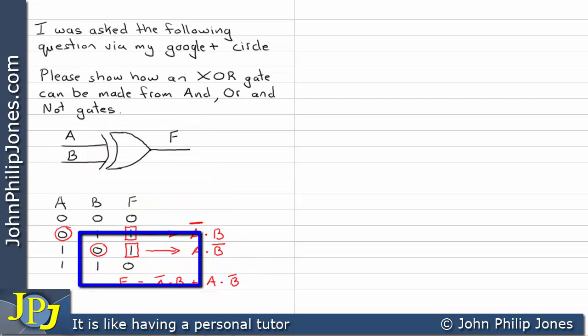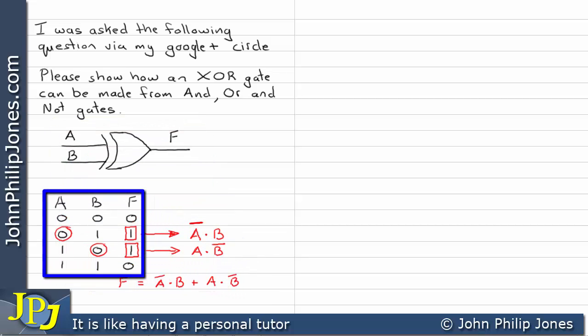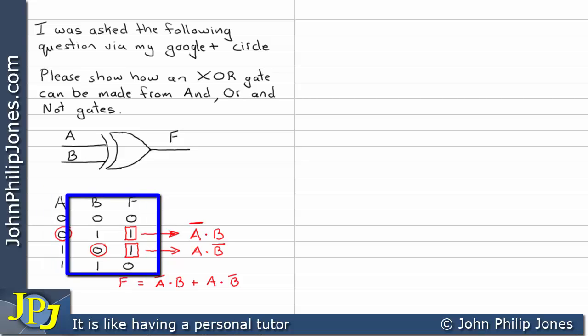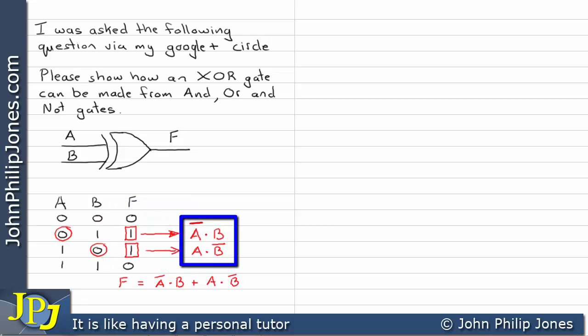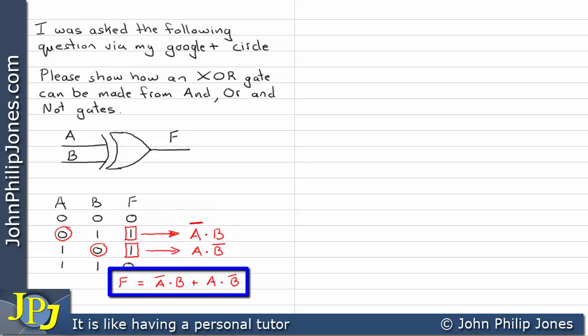We got this Boolean expression from the truth table. Once we know the truth table and work on it to produce the min terms, we can find the sum of min terms. This sum of min terms is then used to help produce the logic circuit.